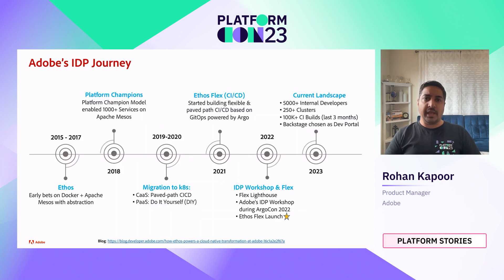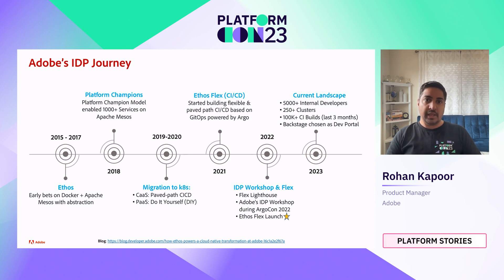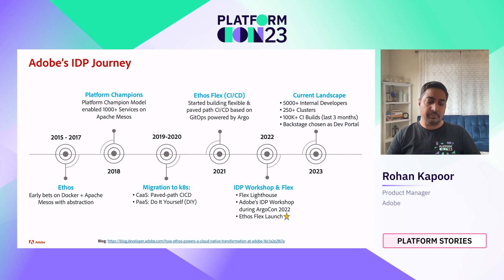Back in 2012, Adobe had already moved to a subscription model, which was a game changer. From 2015 to 2017, Adobe made the decision to move to a cloud native containerized model, and the Ethos team was created. Ethos started its journey by moving initially to Apache Mesos. In 2018, we built abstraction to move clients over to Mesos and created the Platform Champions program, where we did enablement training and brought in more than 1,000 services in a calendar year.